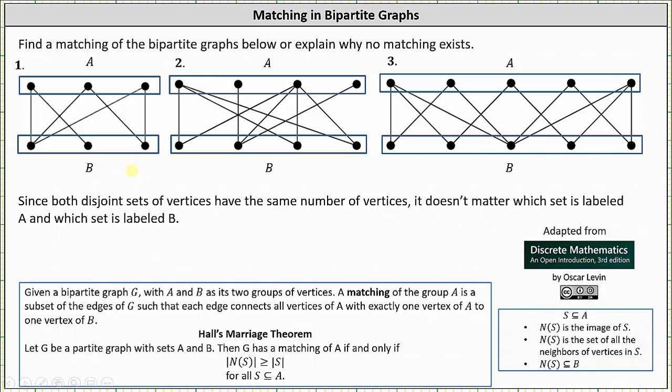For review, given a bipartite graph G with A and B as its two groups of vertices, a matching of the group A is a subset of the edges of G such that each edge connects all vertices of A with exactly one vertex of A to one vertex of B.